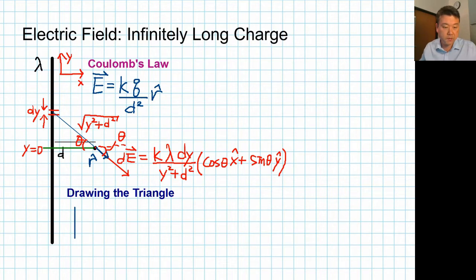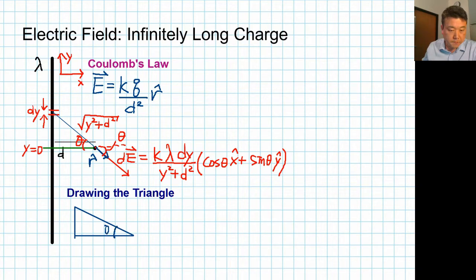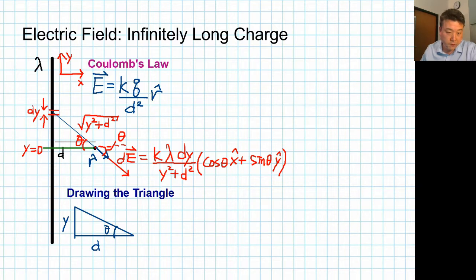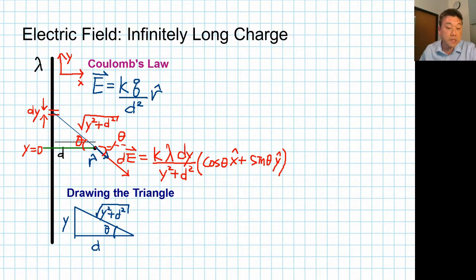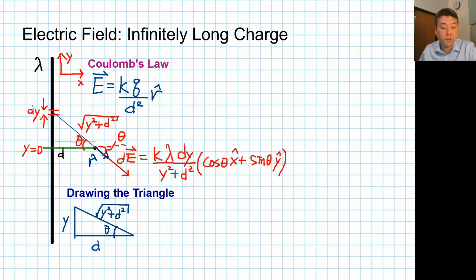Let me copy down a representation of the triangle with the angle theta marked. We know some things about this triangle: this leg is y, this leg is d, and we already figured out the hypotenuse is the square root of y squared plus d squared. This triangle defines angle theta, and we know all the sides needed to calculate sine and cosine theta. Sine theta is opposite over hypotenuse, and cosine theta is adjacent over hypotenuse. This technique allows you to rewrite expressions like cosine theta and sine theta into algebraic form more convenient for future calculation. This technique is called drawing the triangle, and it's useful to know.